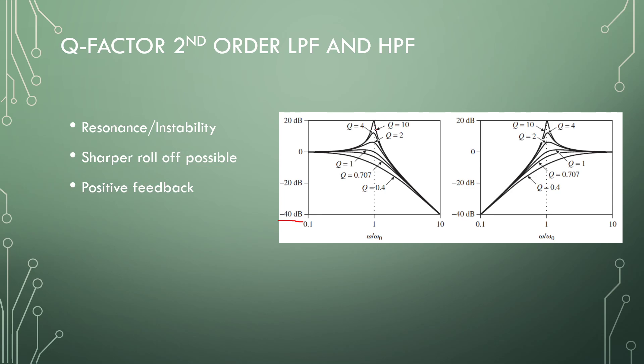These filters typically use a bit of positive feedback, so that we can adjust the Q and the frequency at the same time. But with this resonance, we can have a sharper roll-off for our filters.